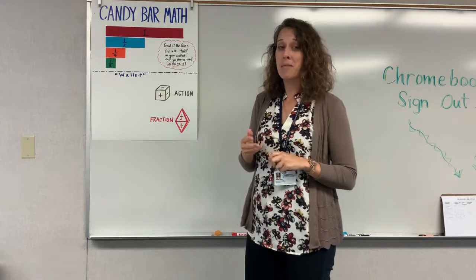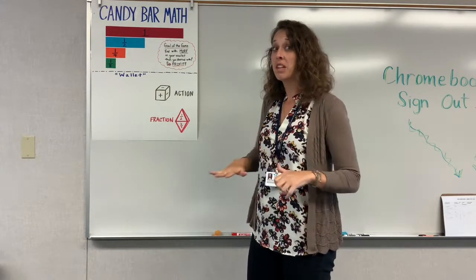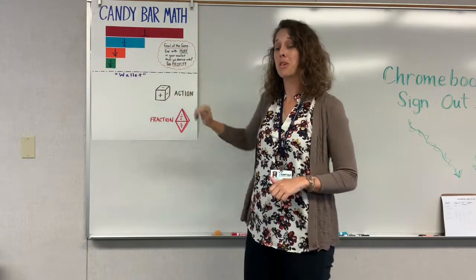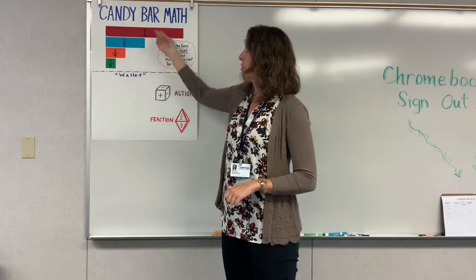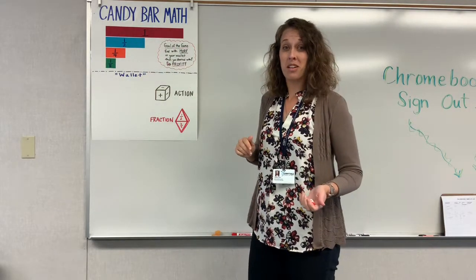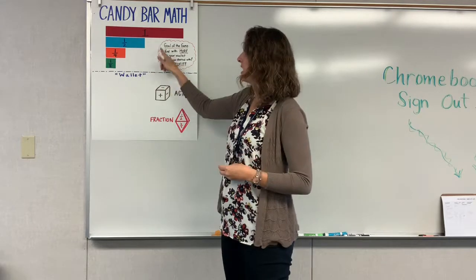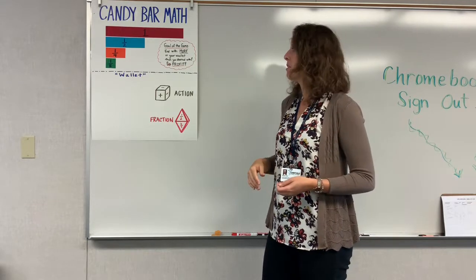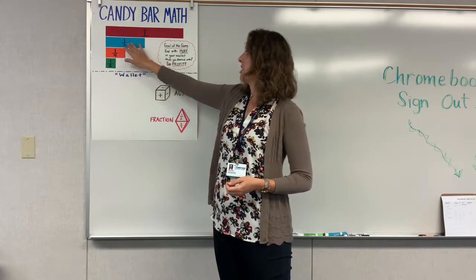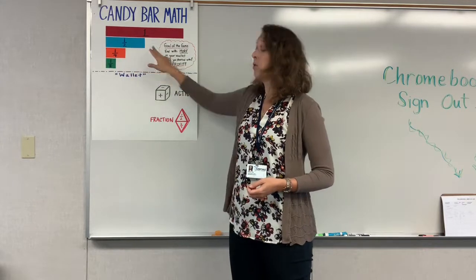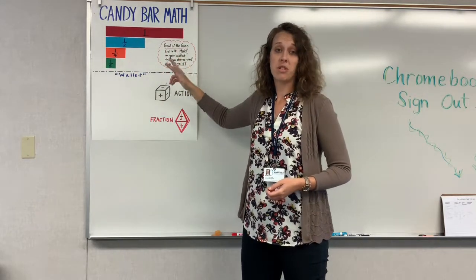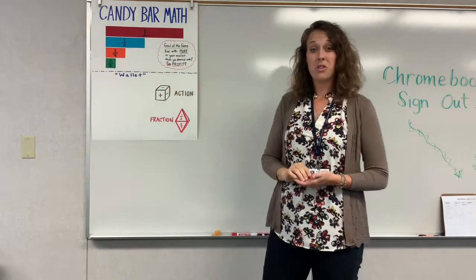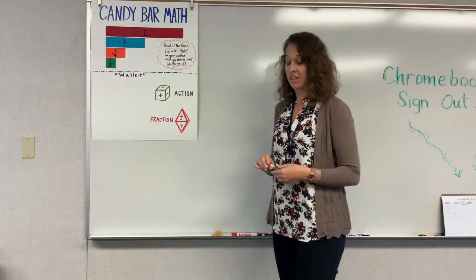At the very basic level, a student might say, I have one red piece or one blue piece or two blues makes one red, which is a great algebra integration. 2B equals R if you want to take it that way. But as students build their math language, they can start saying that one-fourth plus one-fourth plus one-fourth equals three-fourths, or three times one-fourth equals three-fourths.